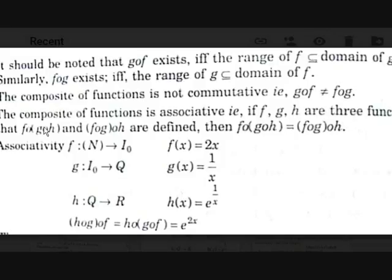The third property: the composite function is associative. That is, if there are three functions f, g, and h, then f∘(g∘h) and (f∘g)∘h are both defined and are equal.